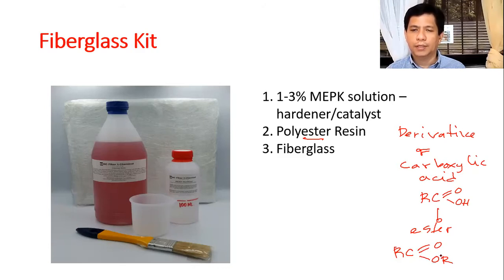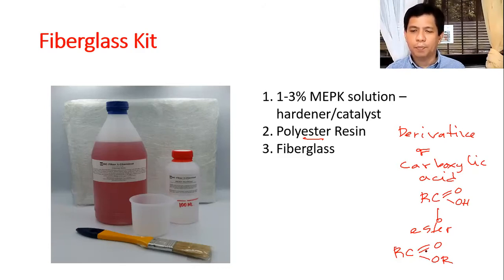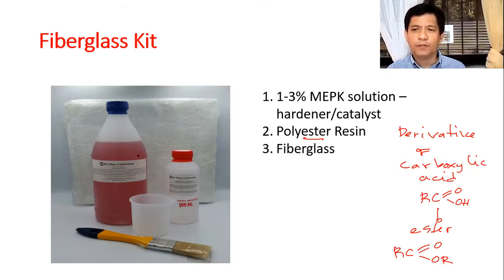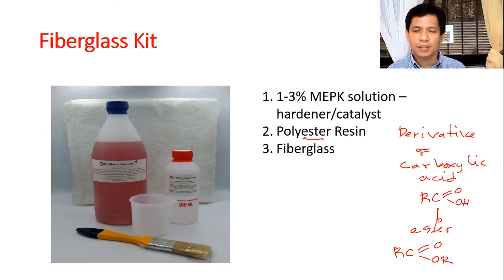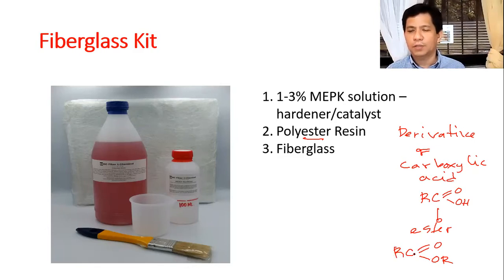The polyester resin in the fiberglass kit contains this ester structure, but these are proprietary chemicals — trade secrets. There are several possible formulas for the ester depending on which R groups the manufacturer uses, but this is the general equation for ester.